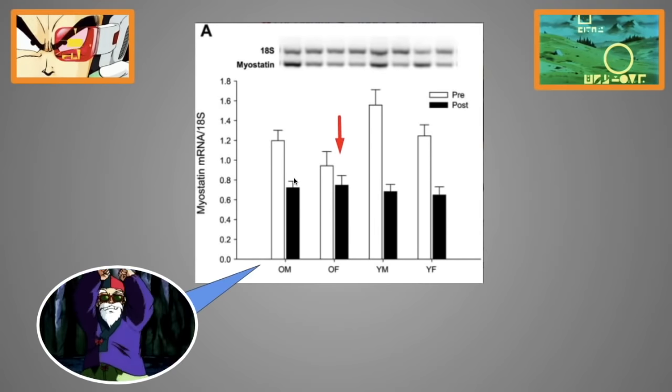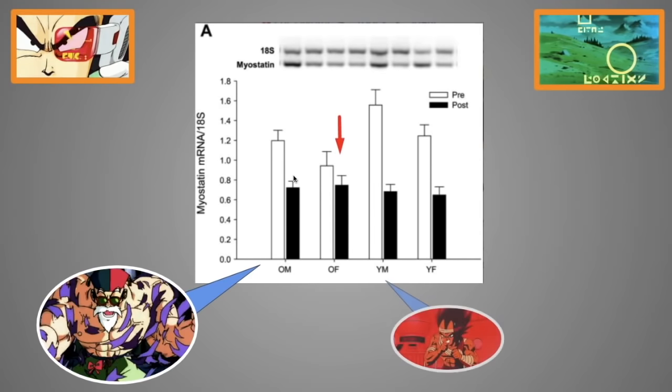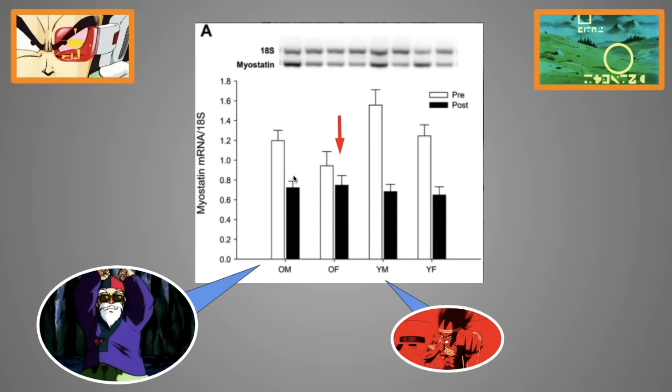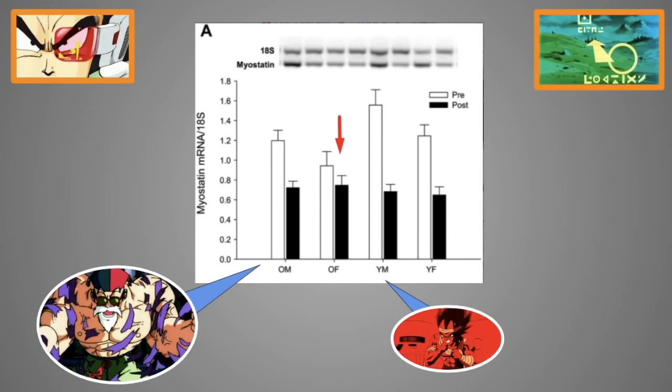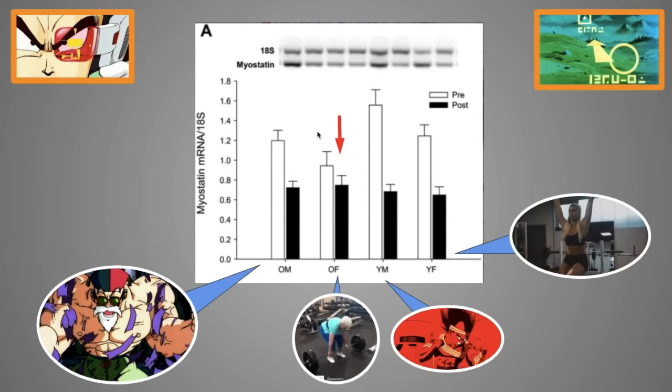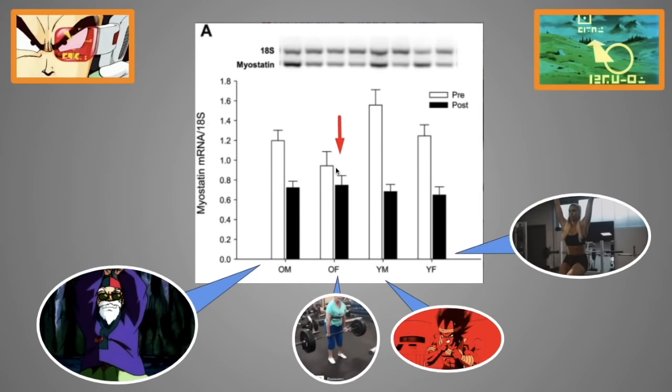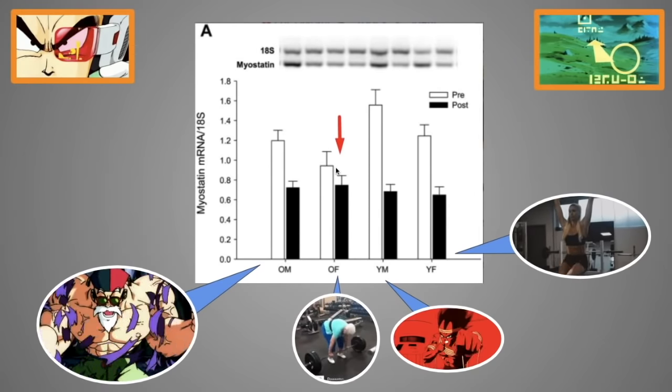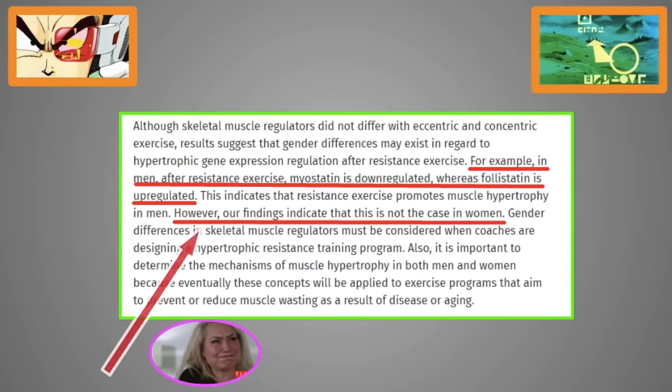As you can see here, old men have a big drop in myostatin after training. Young men have the biggest drop in myostatin after training, which is why young men put on muscle so fast. Young women, decent drop, but old women struggle to lower myostatin, which is why they struggle to put on muscle mass. And several other studies confirm this.